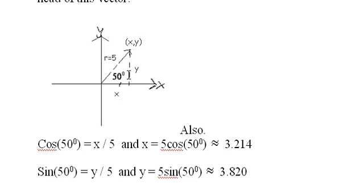Sine of 50 is y over 5. And we solve for y and we find y equals 5 sin 50, which is approximately 2.820.